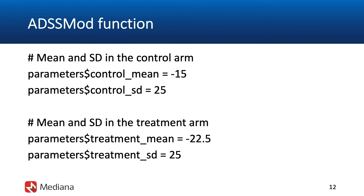This slide presents the parameters that describe the treatment effect assumptions for the two arms. Given the distributional assumptions for the primary efficacy endpoint, we need to specify the mean value for the control arm and the treatment arm, as well as the standard deviation. A common standard deviation is assumed — set to 25 points on the PANSS total score scale. The mean change is expected to be negative 15 in the placebo arm, and a larger change of negative 22.5 on average is expected in the treatment arm.